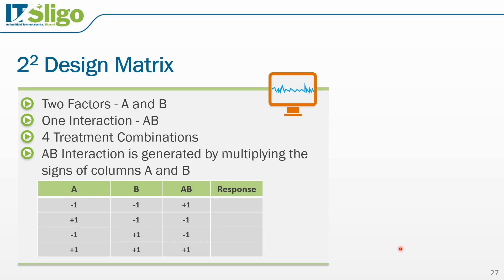Taking the example of a 2^2 experiment, we have two factors A and B and one interaction AB, giving four treatment combinations. In the design matrix, factor A has levels minus 1 and plus 1, and similarly for factor B. The interaction AB is determined by multiplying the coded values: minus 1 times minus 1 equals plus 1; plus 1 times minus 1 equals minus 1; minus 1 times plus 1 equals minus 1; and plus 1 times plus 1 equals plus 1. This gives us our complete design matrix.